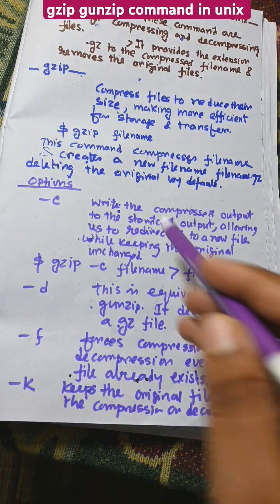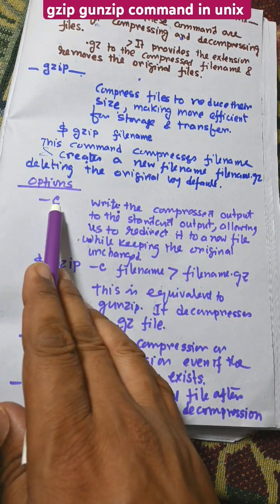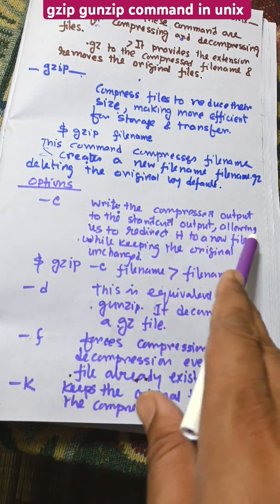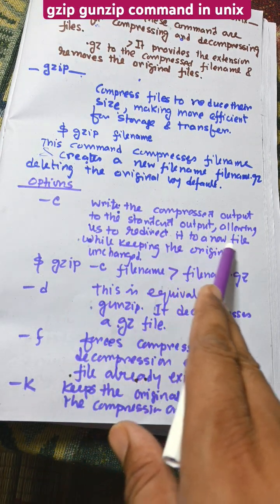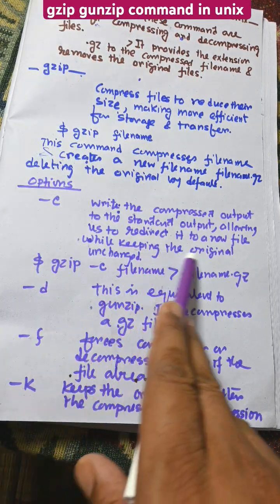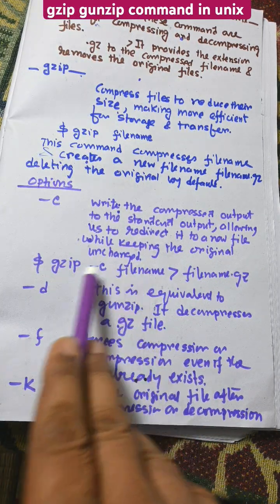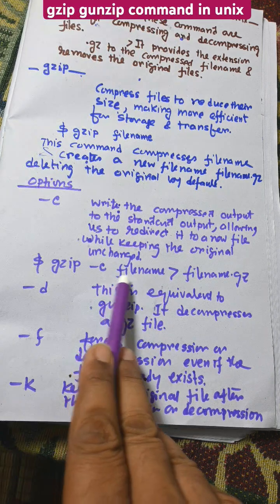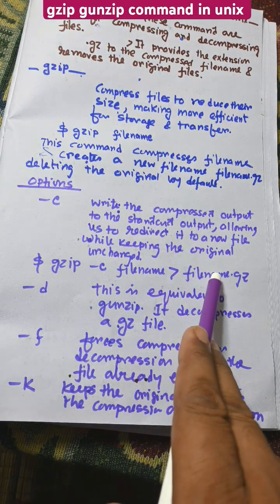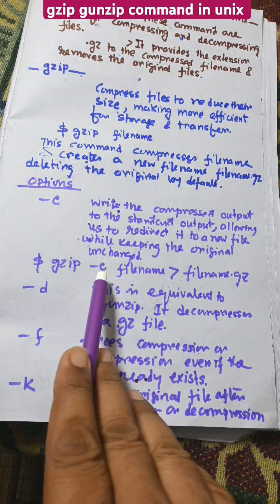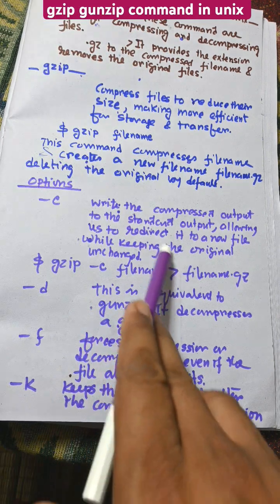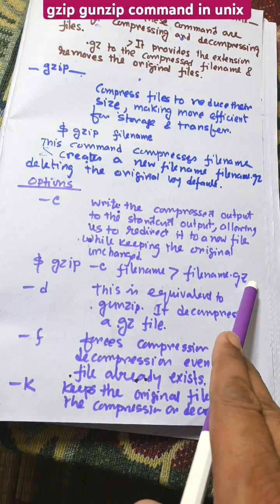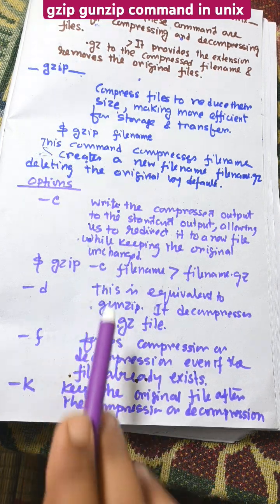Different options are available. We can use `gzip -c` to write compressed output to the standard output, allowing us to redirect it to a new file while keeping the original unchanged. For example: `gzip -c filename > filename.gz`. The original file remains intact, and the content is transferred to filename.gz. This is a very important option.